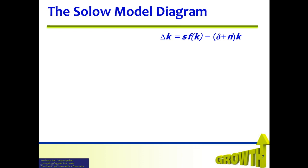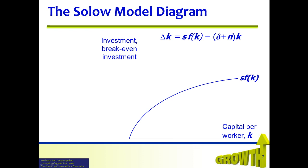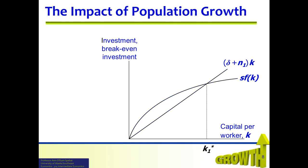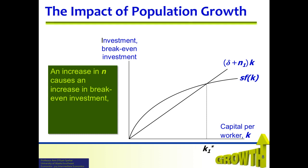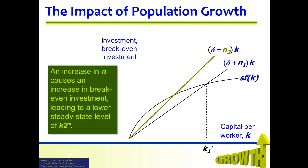Let's visualize this on a Solow model diagram. There is S times f(k), or investment, and here is (delta plus n) times k. And there is k-star — our steady-state level of capital per worker. An increase in n causes an increase in break-even investment, leading to a lower steady-state level of capital, k2.